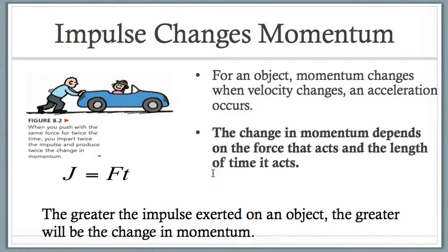There is a formula for impulse. It's pretty easy. It's impulse equals force times time. So again, you're just multiplying two things together. The J here is a variable scientists picked for impulse. I never really looked into why they picked J, but that's what they picked. So your formula is J = Ft.